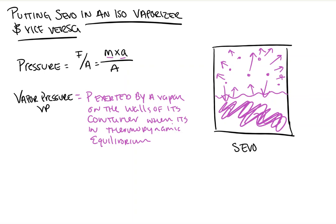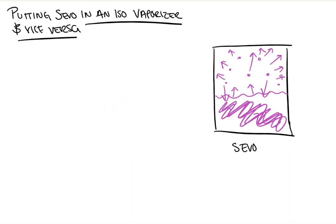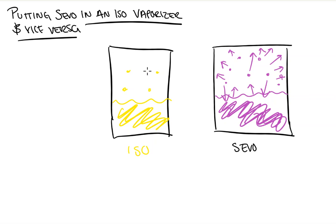I'm going to go ahead and erase this so I can make another drawing. We're going to draw another container right next to this one, and this is going to be our iso container, again filled halfway with isoflurane, with some of those iso molecules floating around.